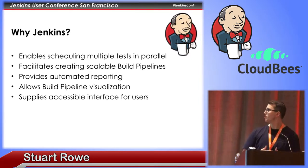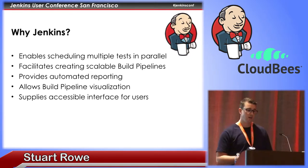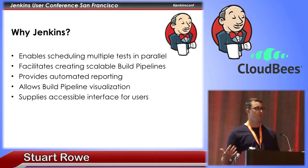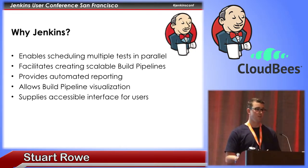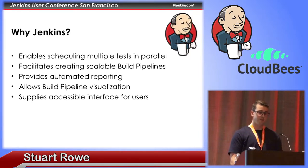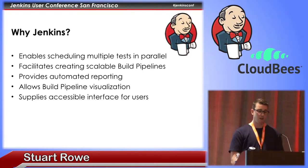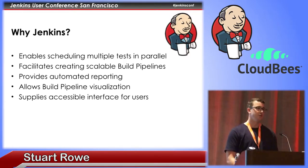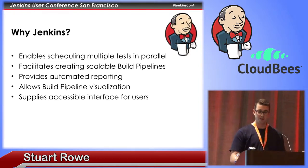We turned to Jenkins because it provided scheduling tests in parallel. It allowed us to create scalable build pipelines where we could add more machines to a build farm and get more test throughput. We could automate reporting and get emails being sent automatically. We could visualize our build pipelines through the build graph view plugin, and through the web UI there's a very accessible interface that our engineers could use and felt comfortable using on a daily basis.